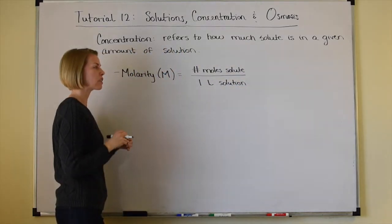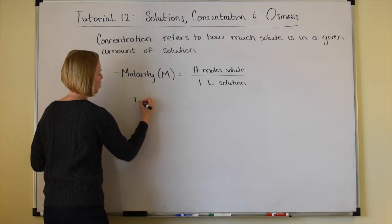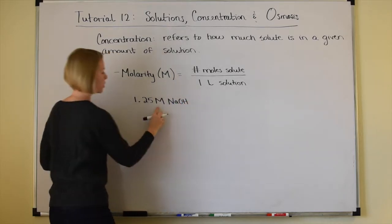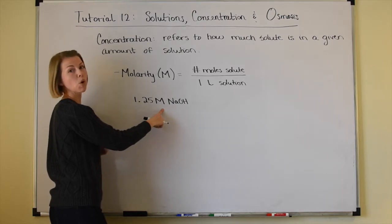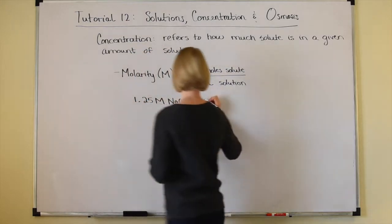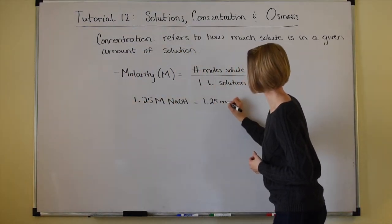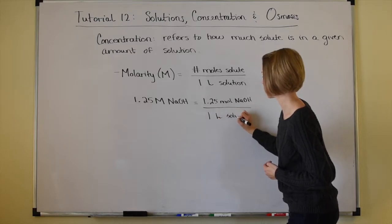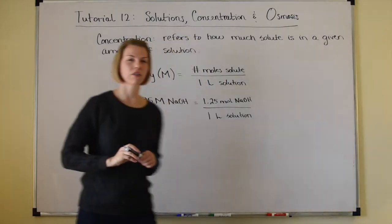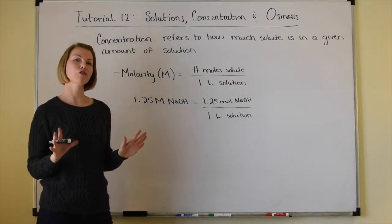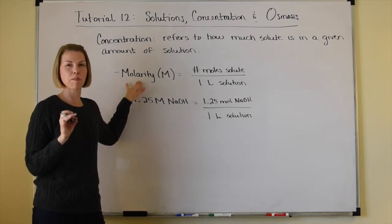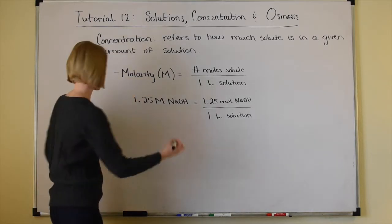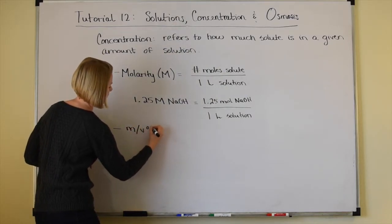For example, if you have a solution of sodium hydroxide that is 1.25 molar, that capital M means moles per liter — so there are 1.25 moles of sodium hydroxide in every one liter of that solution. Molarity is probably the most common unit you'll see in the chemistry lab. However, in the medical field, you're probably going to see a lot more units expressed in percent.